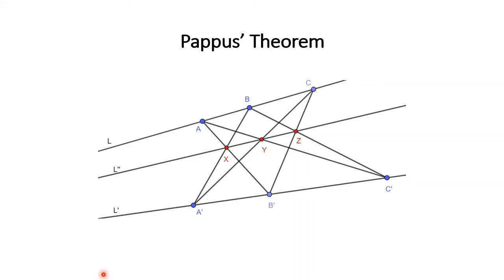Two of the important theorems found in projective geometry are the Pappus theorem and the Desargues theorem. The Pappus theorem states: suppose we have points A, B, and C on the line L, and the points A', B', and C' on the line L'. If the line AB meets the line A'B' at point X, and the line AC meets the line A'C' at point Y, and lastly the line BC meets the line B'C' at point Z, then the three points X, Y, and Z are collinear. Please refer to the extended abstract for the proof about the Pappus theorem.